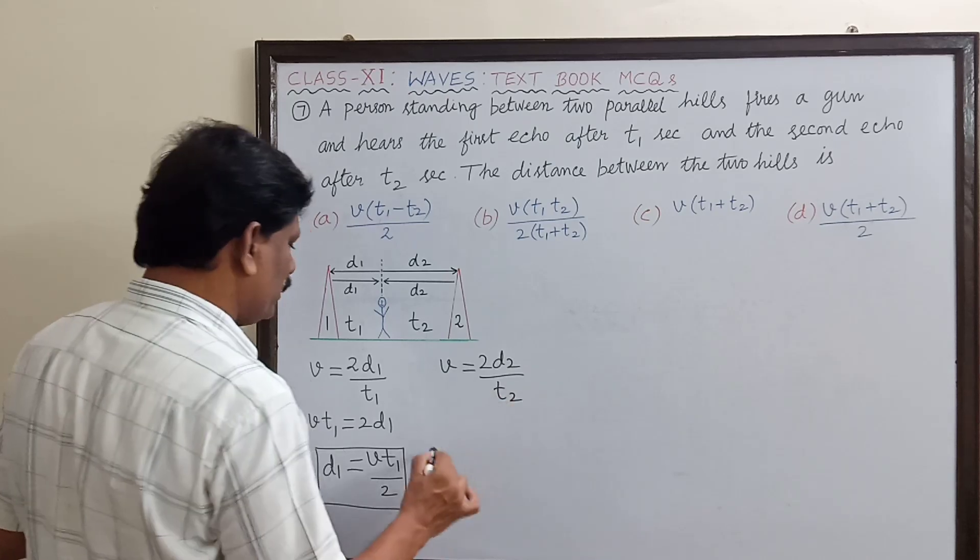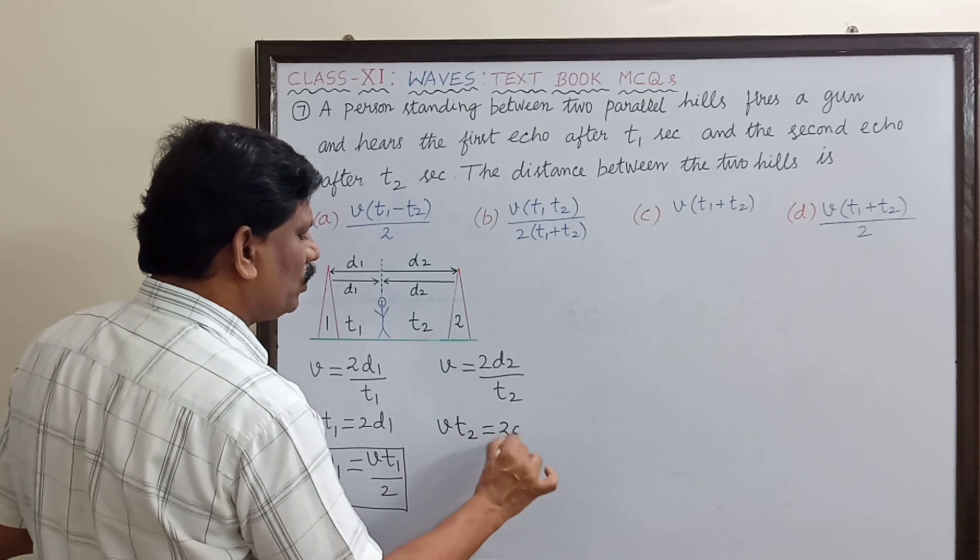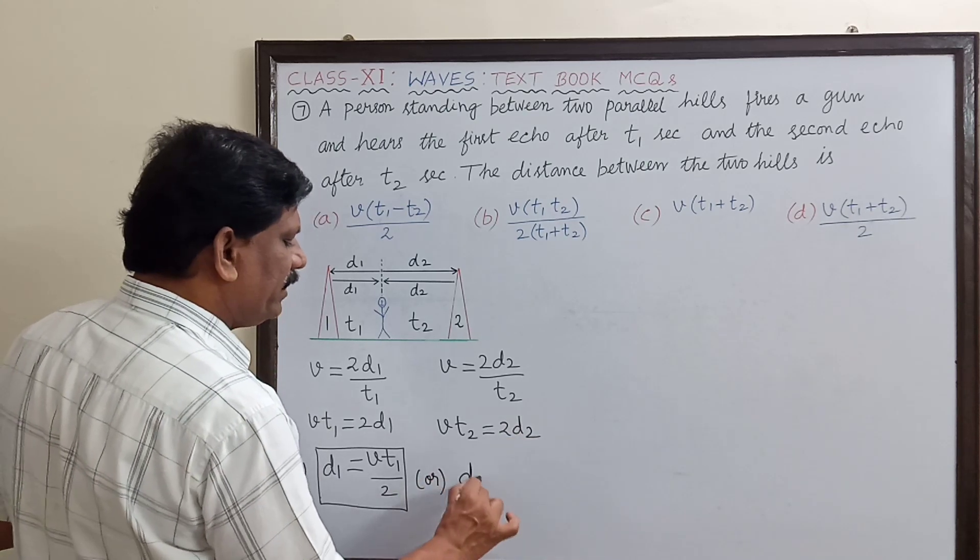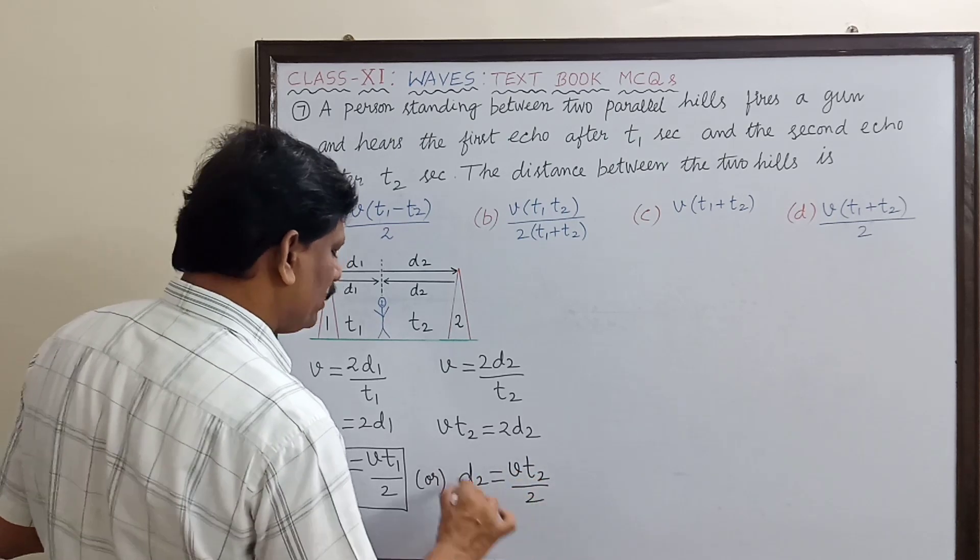So v times t2 is equal to 2d2, or the distance d2 is equal to v times t2 divided by 2.